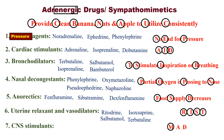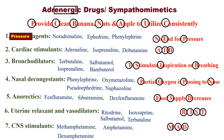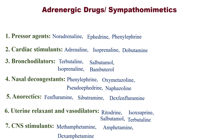The last category — number seven: CNS stimulants. When the central nervous system is over-stimulated, a person becomes mad. Remember 'MAD': M for Methamphetamine, A for Amphetamine, and D for Dexamphetamine. Hope this video is useful. Thank you.